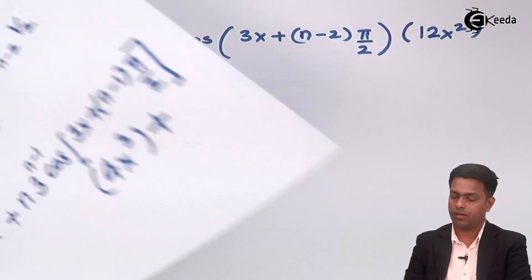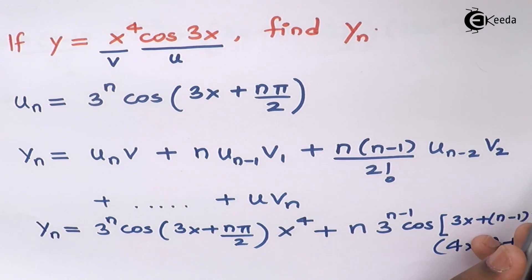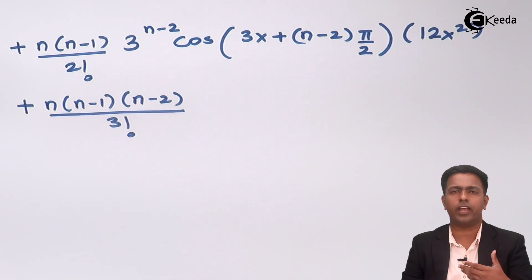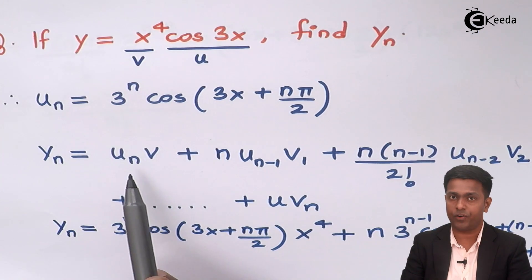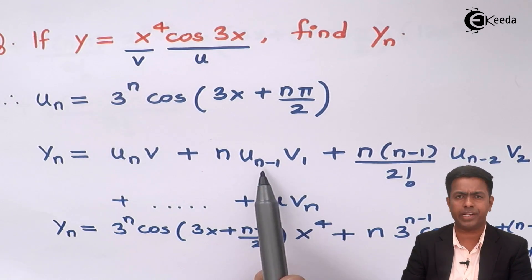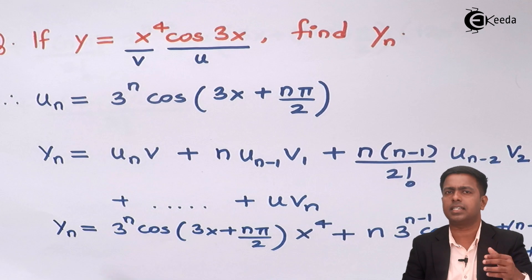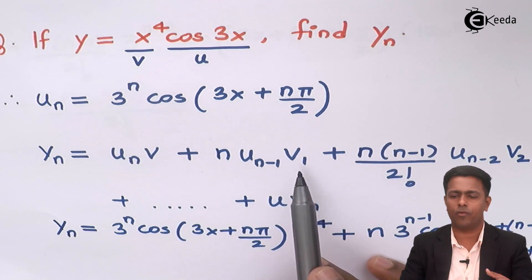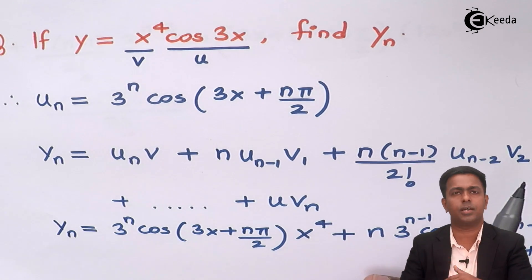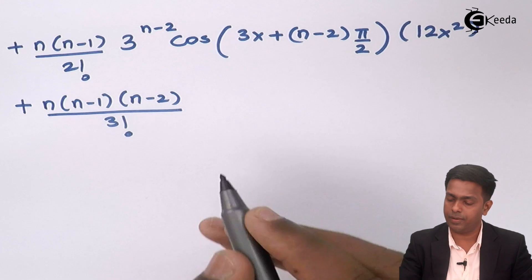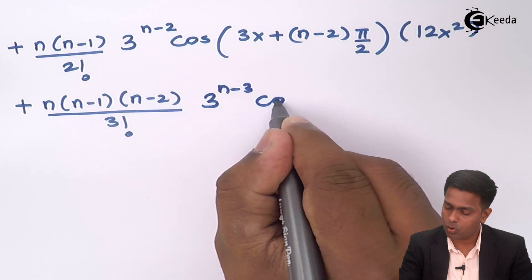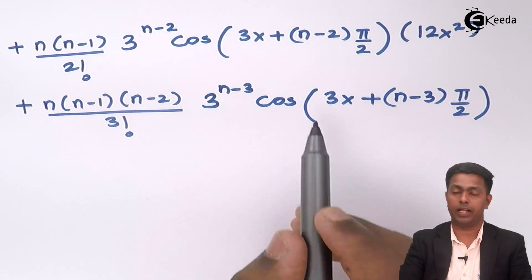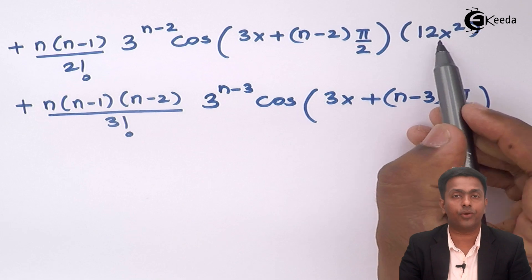After that the next term involves nC3 times u(n−3) times v3. For u(n−3), we replace n with n−3 to get 3 to the power (n−3) times cos(3x + (n−3)π/2). Then v3 is the derivative of v2 = 12x², which is 24x.